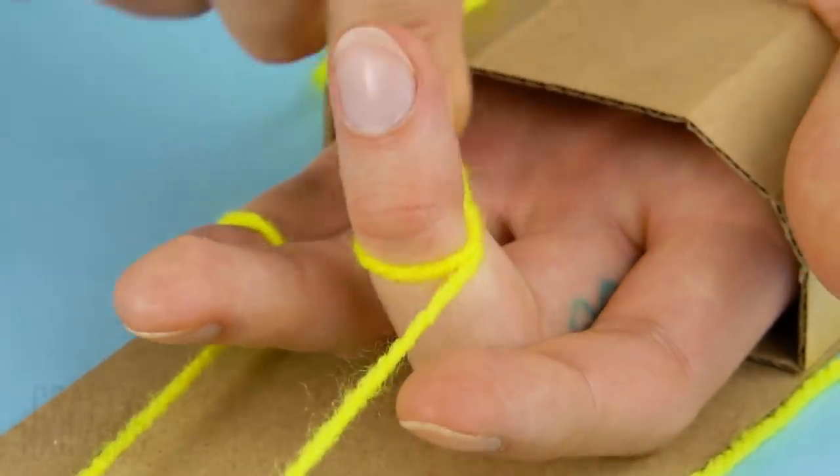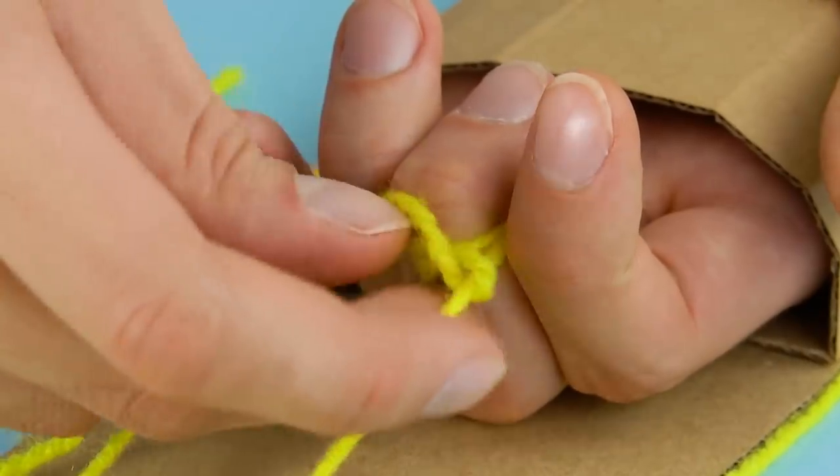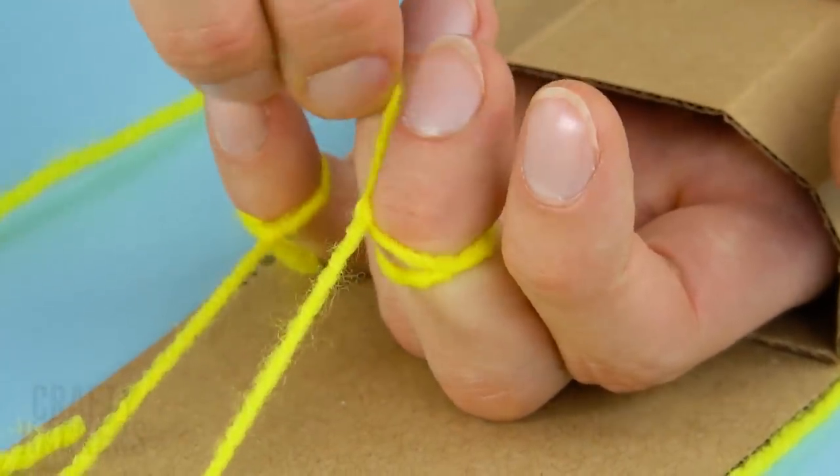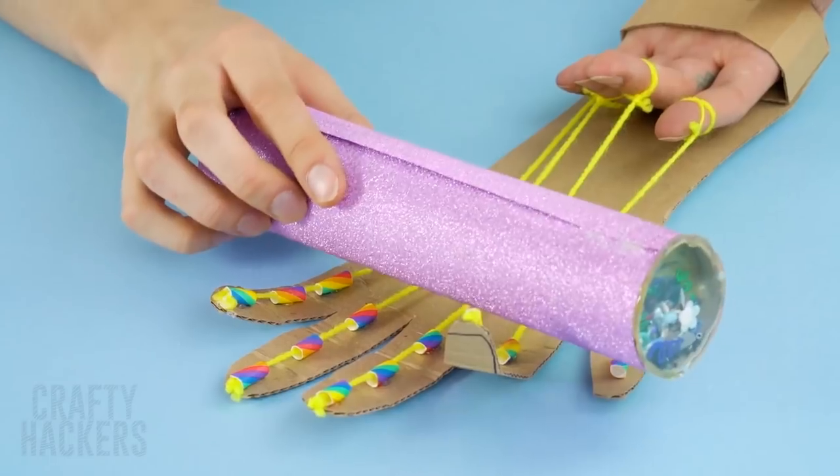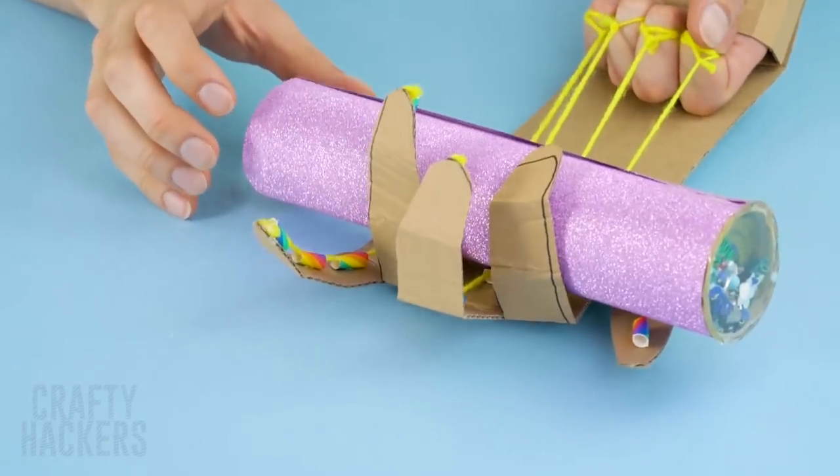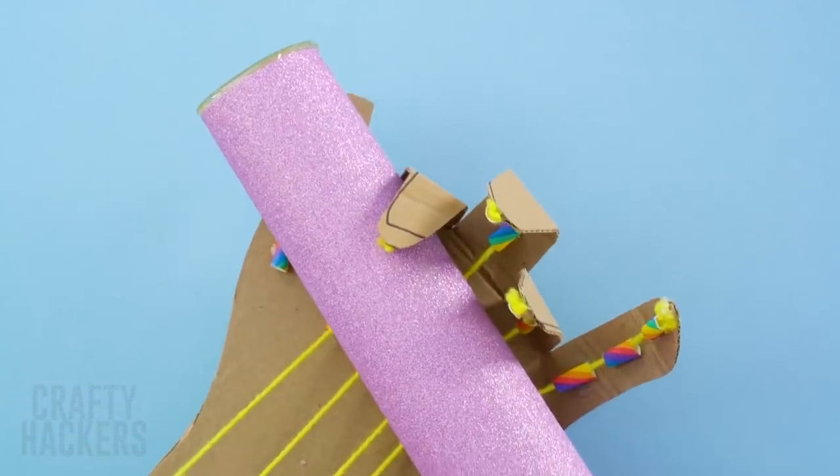Now put your hand through the hand slot and tie the ends of the yarn onto your fingers. Put an item into the robot hand and pull your fingers back. The robotic hand will actually grasp the object. Pretty cool, right? We just learned a bit about mechanics while having a lot of fun.